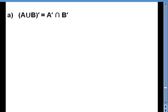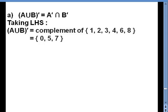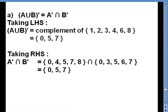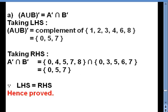For the verification in question 4, part A, we verify that (A union B) complement equals A complement intersection B complement. Taking LHS: A union B complement means all elements not in A union B, removing those from U gives {0, 5, 7}. Taking RHS: A complement intersection B complement gives common elements from both sets, which is {0, 5, 7}. Since LHS equals RHS, hence proved.